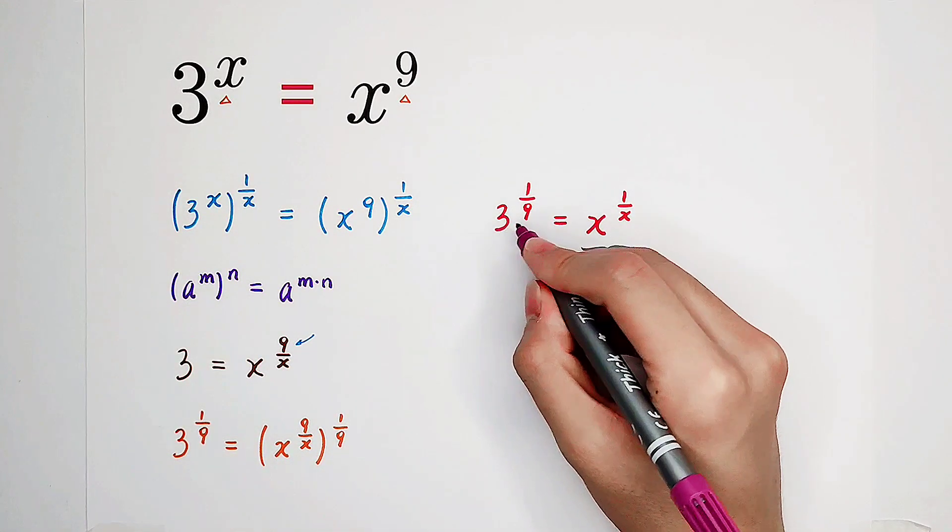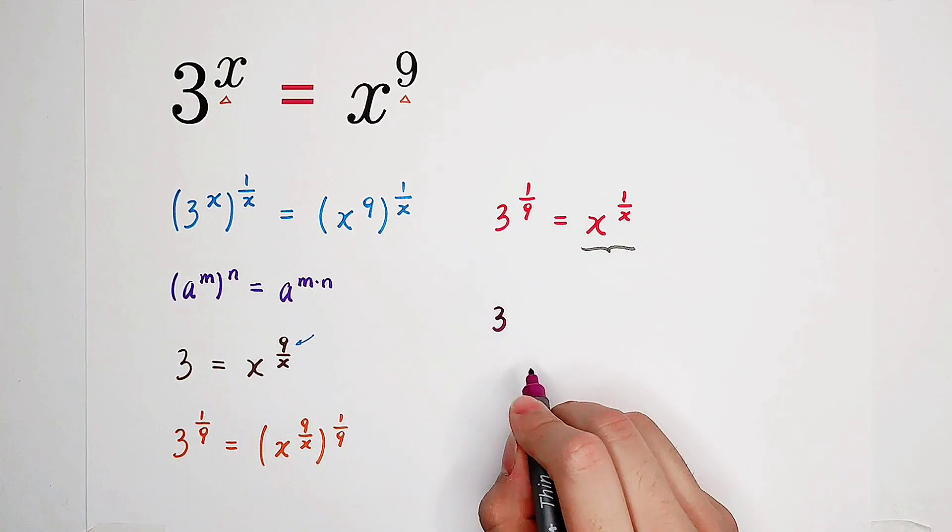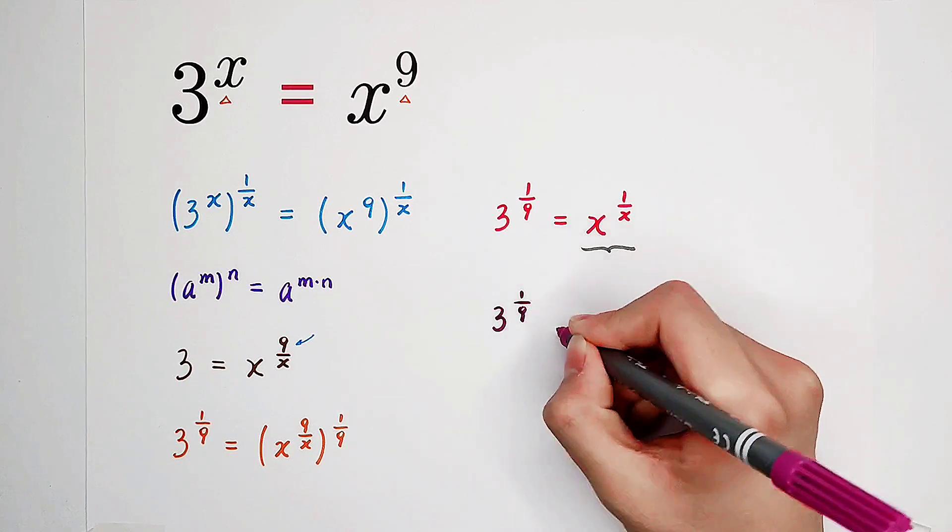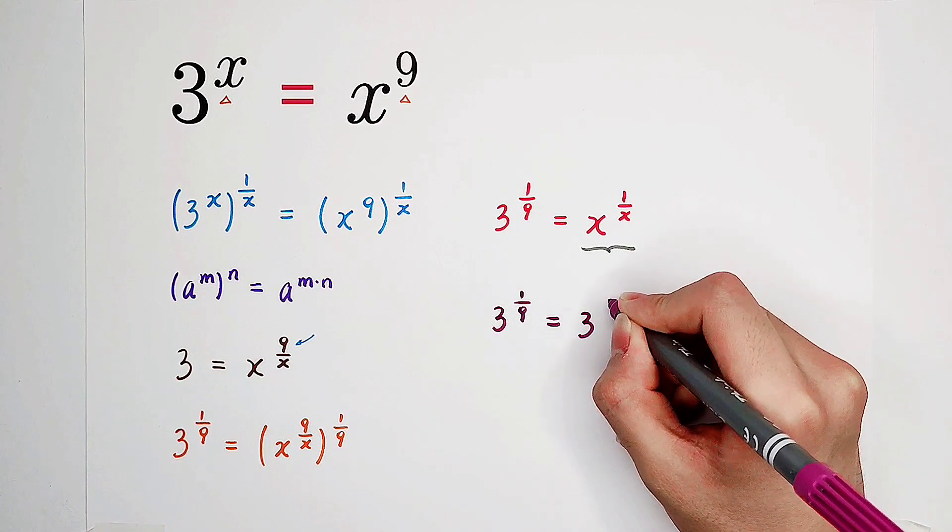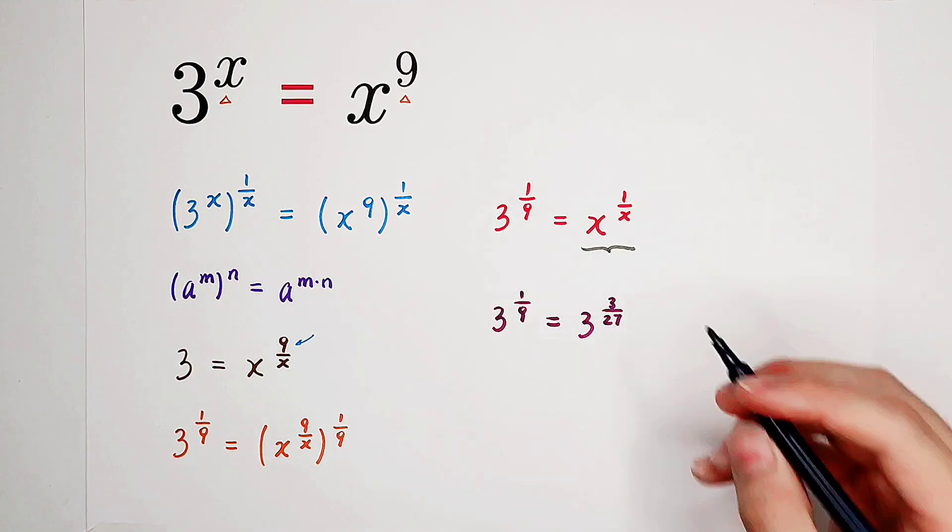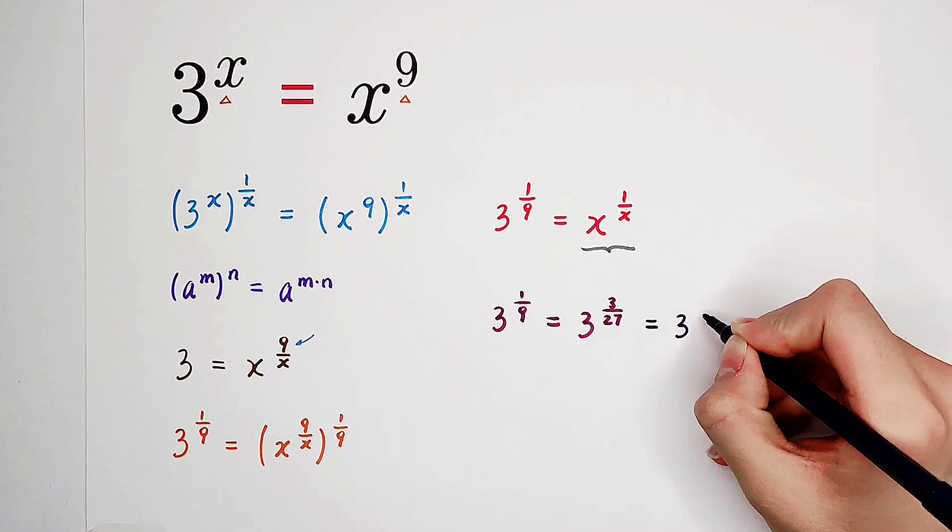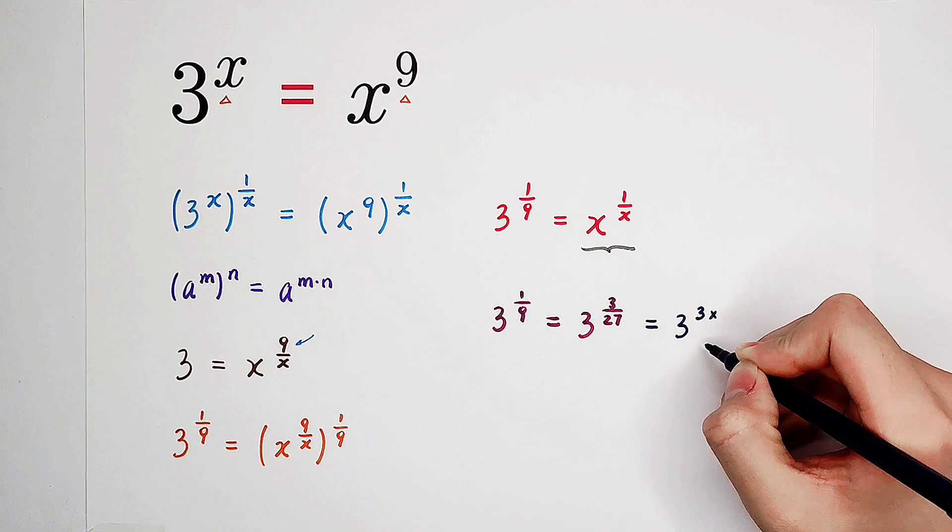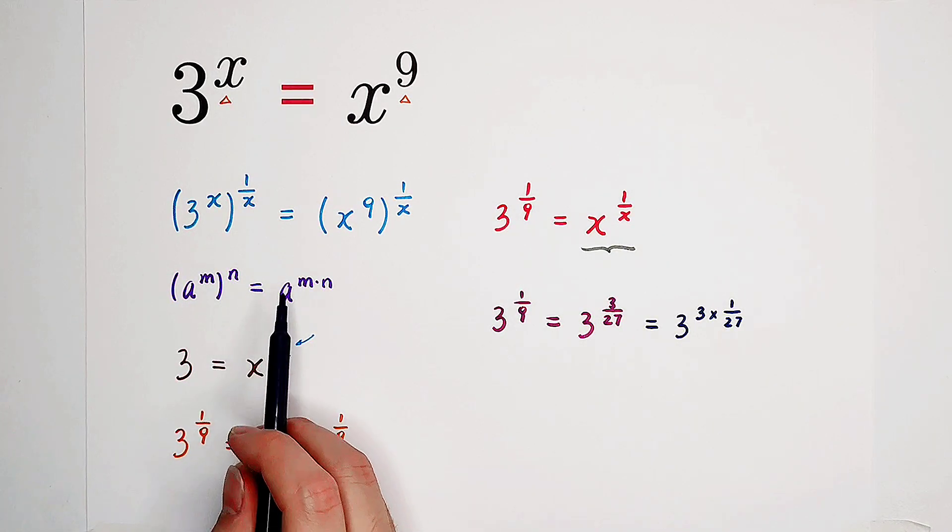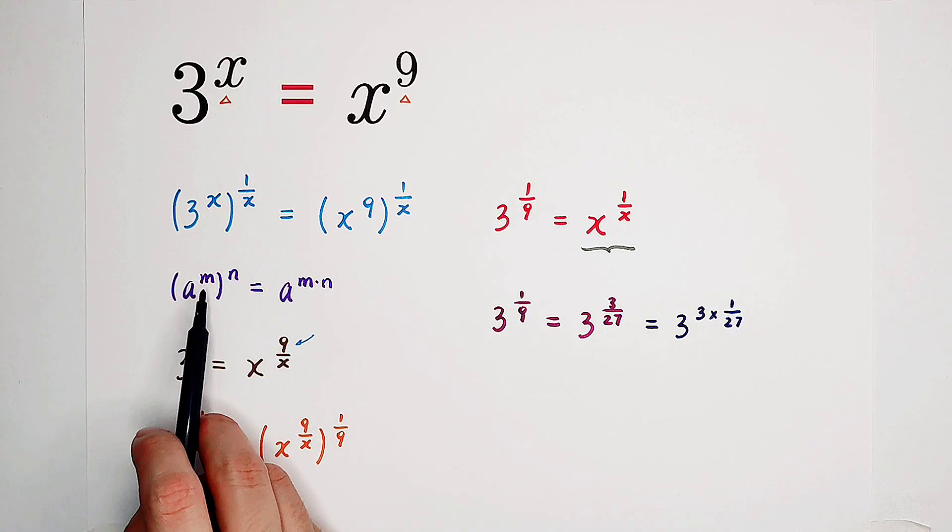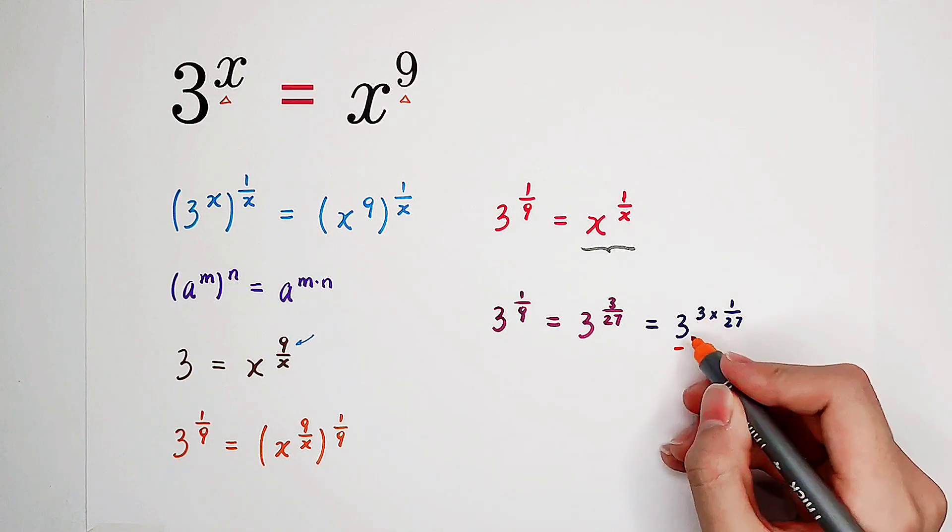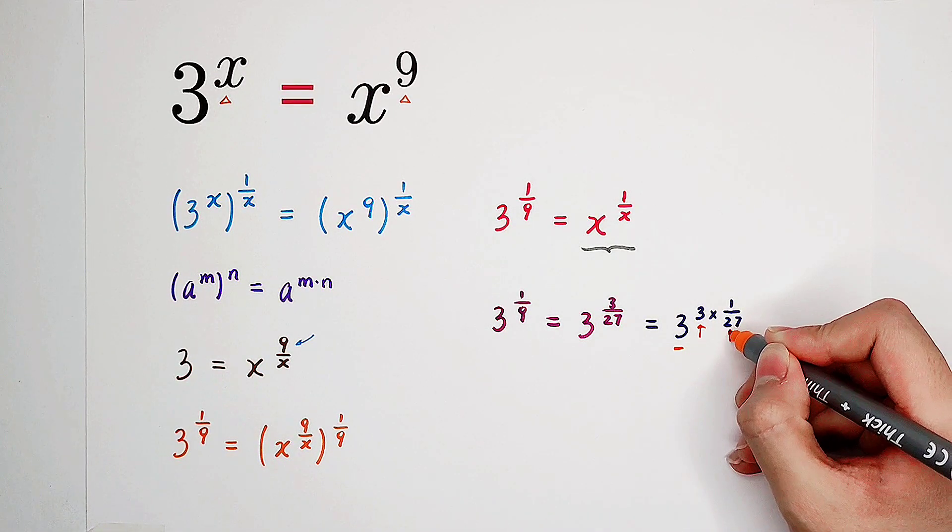Okay, 3 to the power of 1 over 9, this 1 over 9, can actually be written as 3 over 27. Okay, and then, this exponent is 3 times 1 over 27. According to this formula, a to the power of m times n equals a to the power of m, then all to the power of n. So now I have a is 3, the base. This is m, this is n.